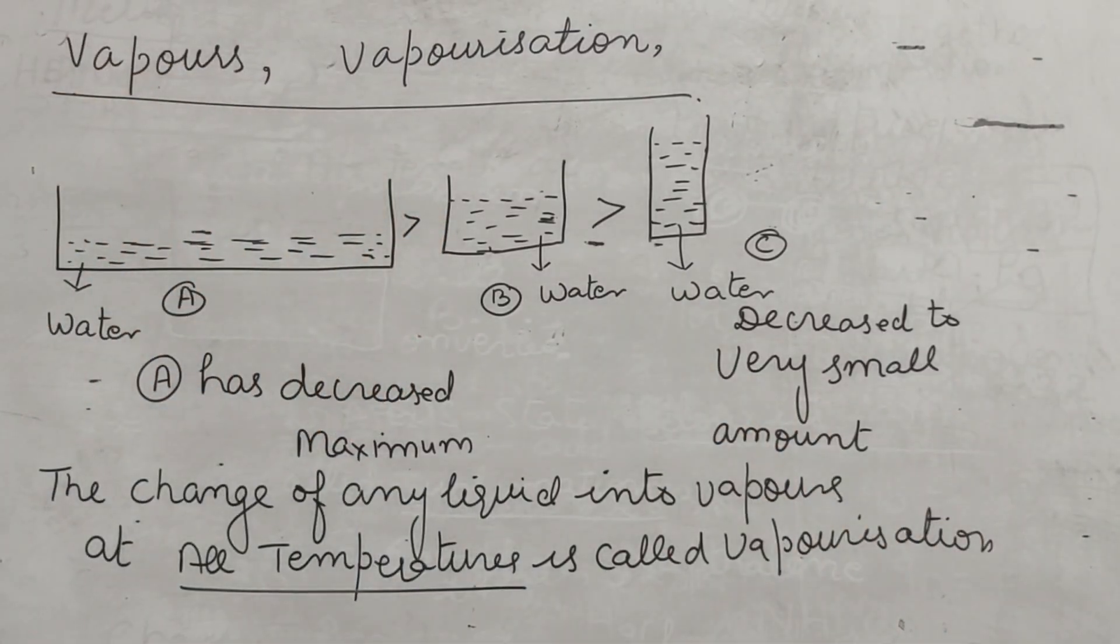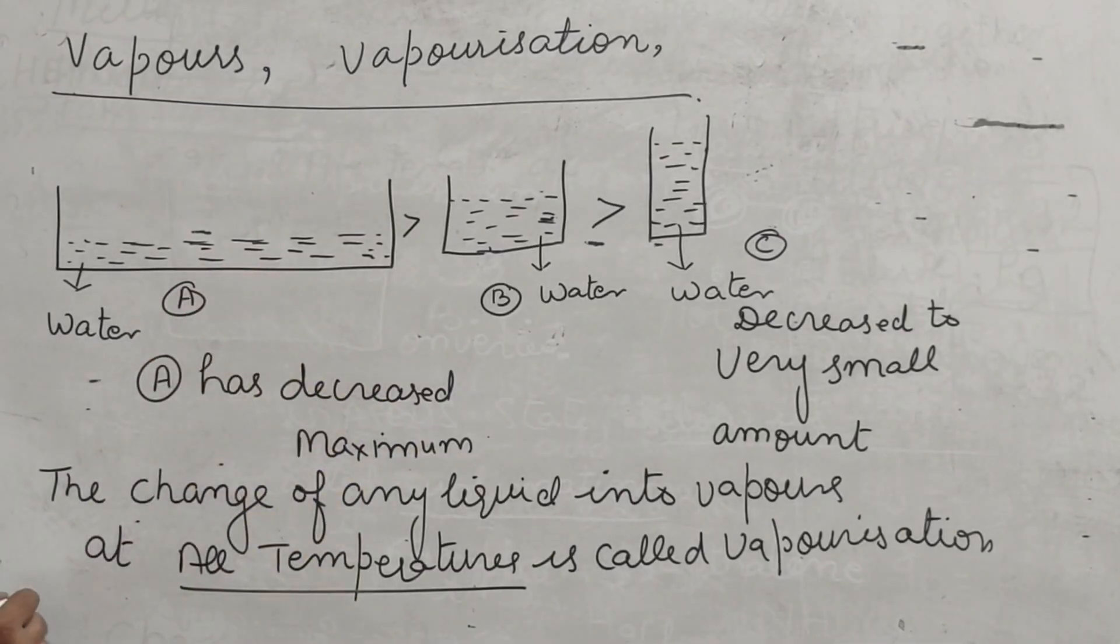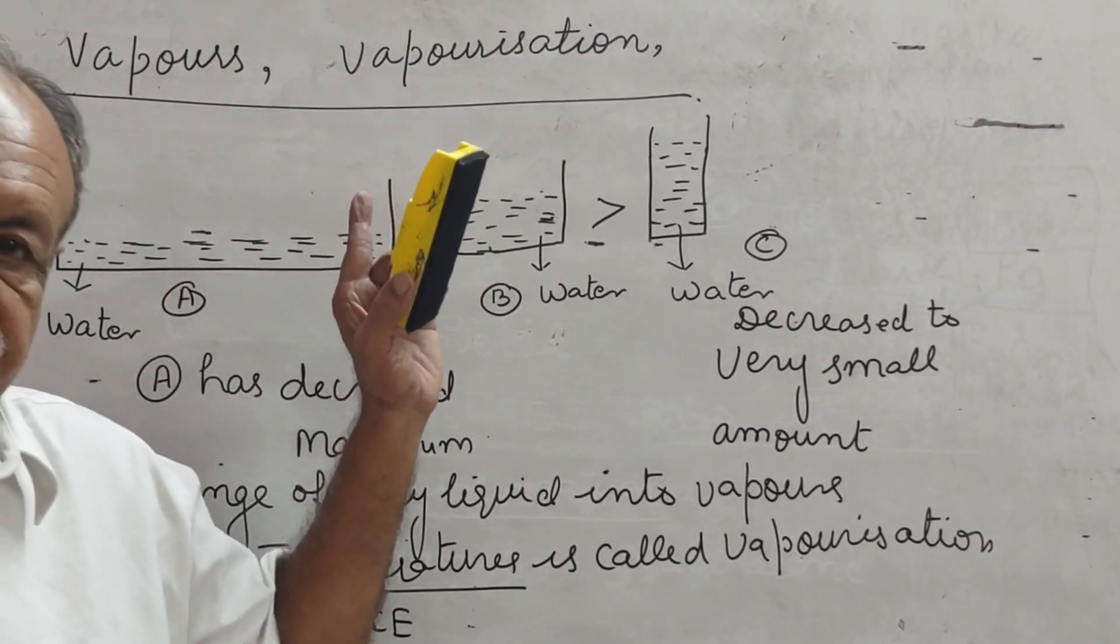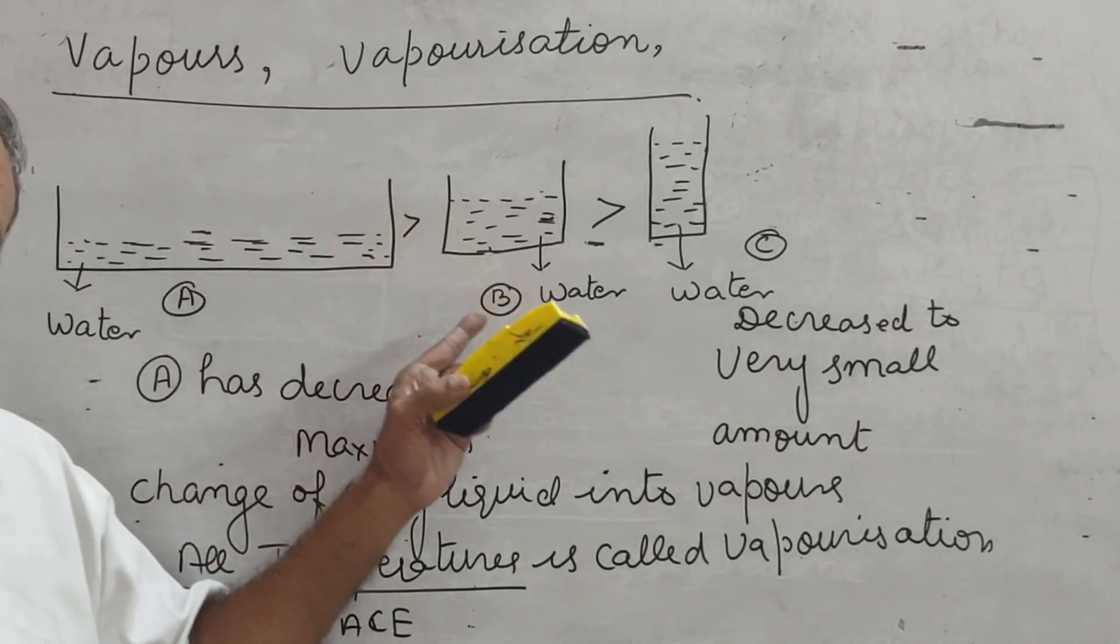Now, what is vaporization? Vaporization takes place at all temperatures. And vaporization takes place only at surface. Vaporization is surface phenomena. It takes place at all temperatures.